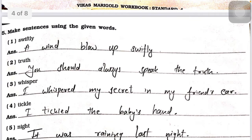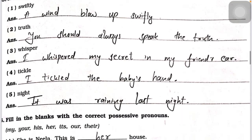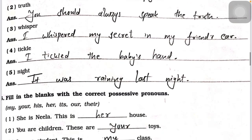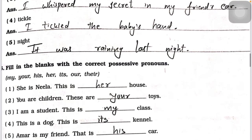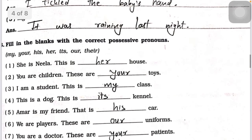Now make sentences from the given words. Swiftly — the wind blew swiftly. Truth — you should always speak the truth. Whispered — I whispered my secret into my friend's ear. Tickle — I tickled the baby's hand. Night — it was raining last night.